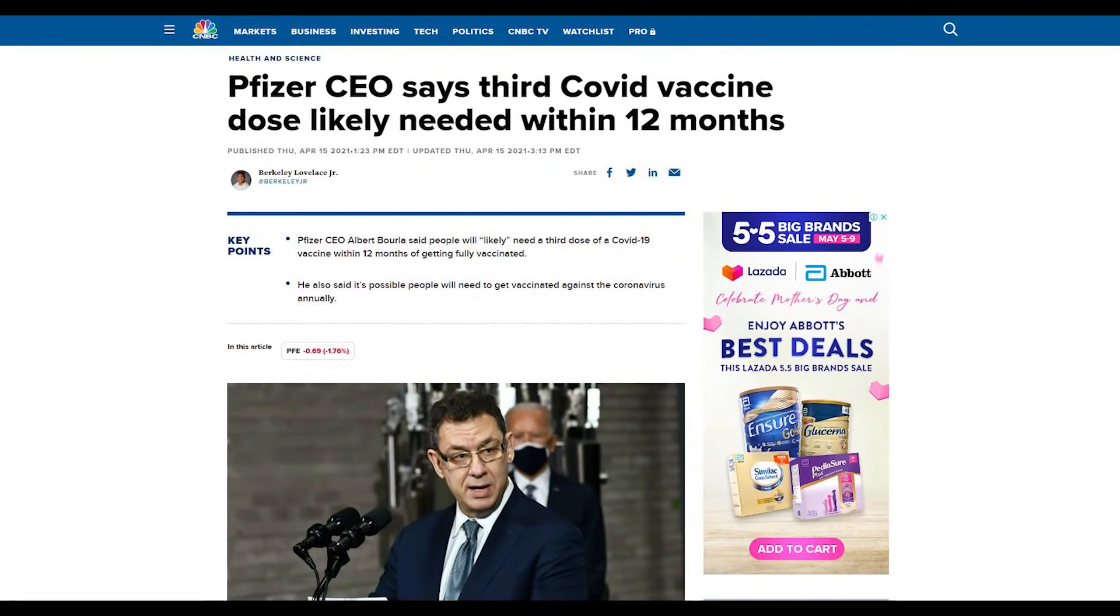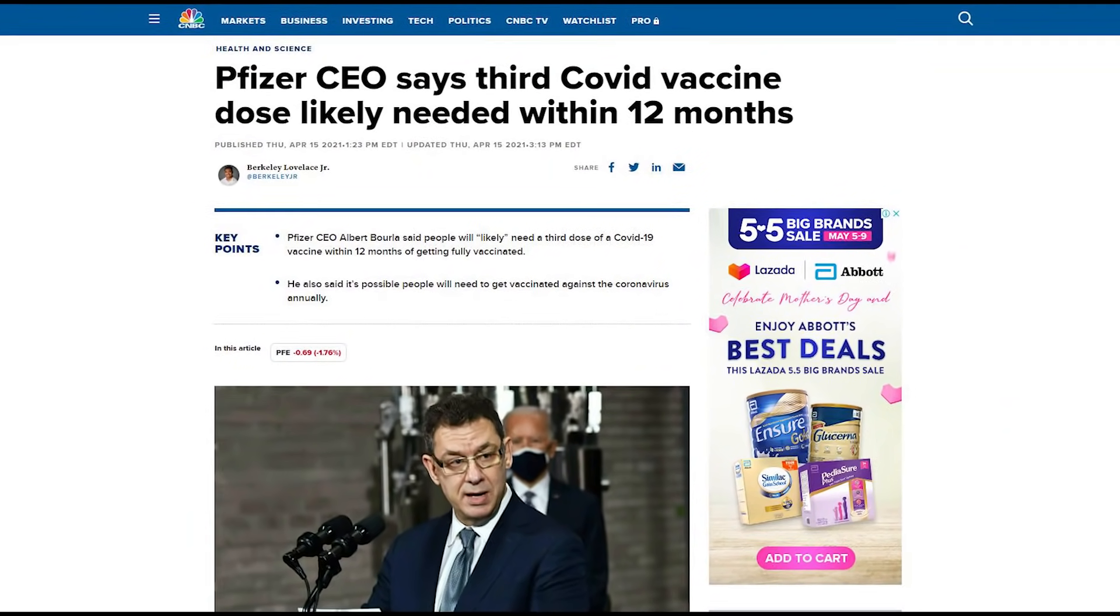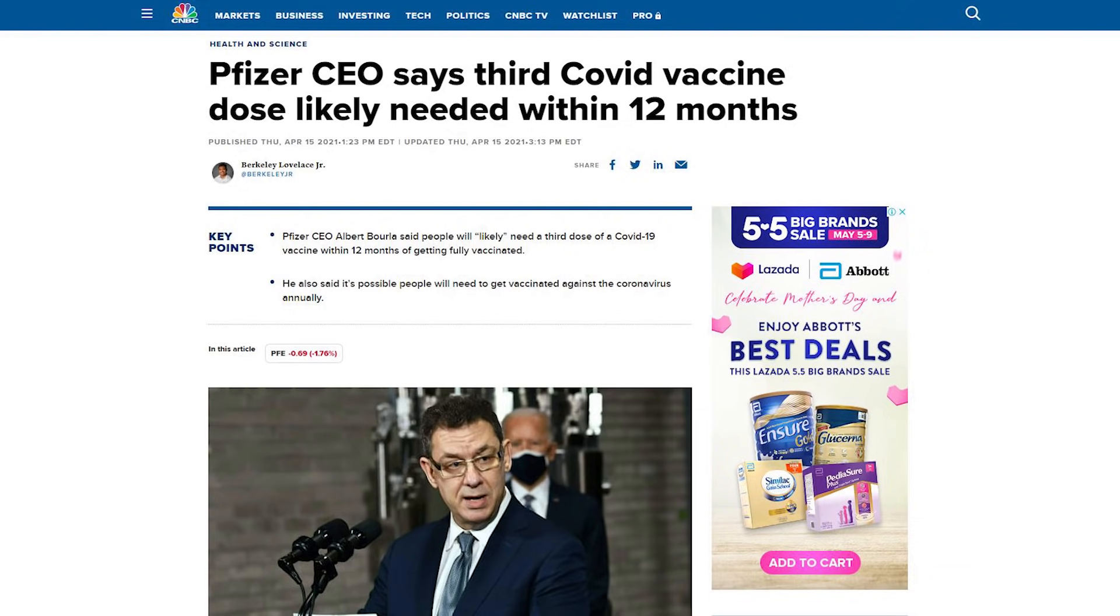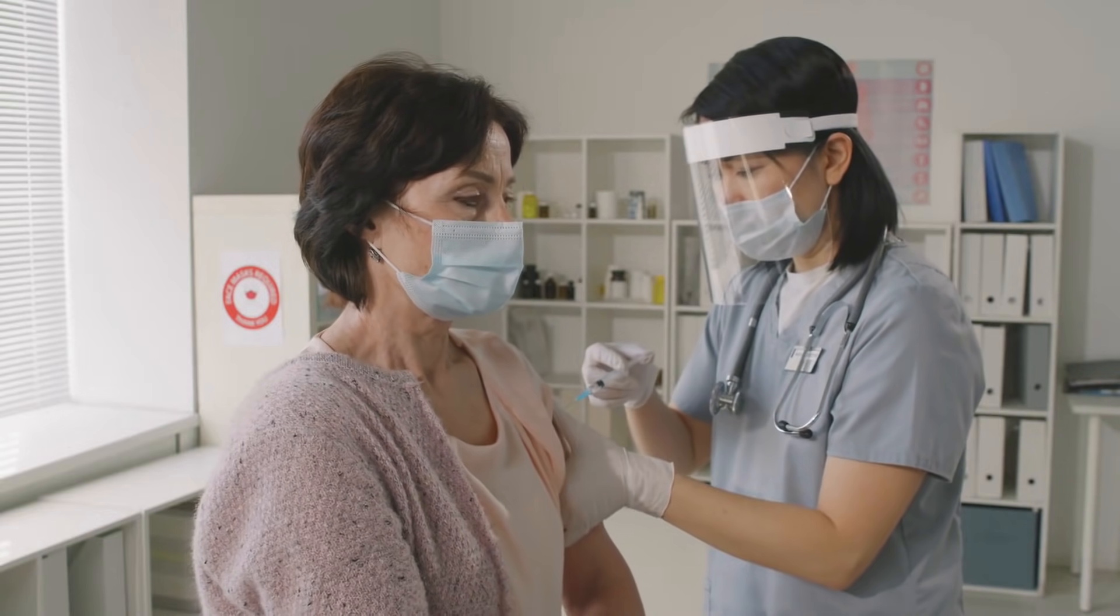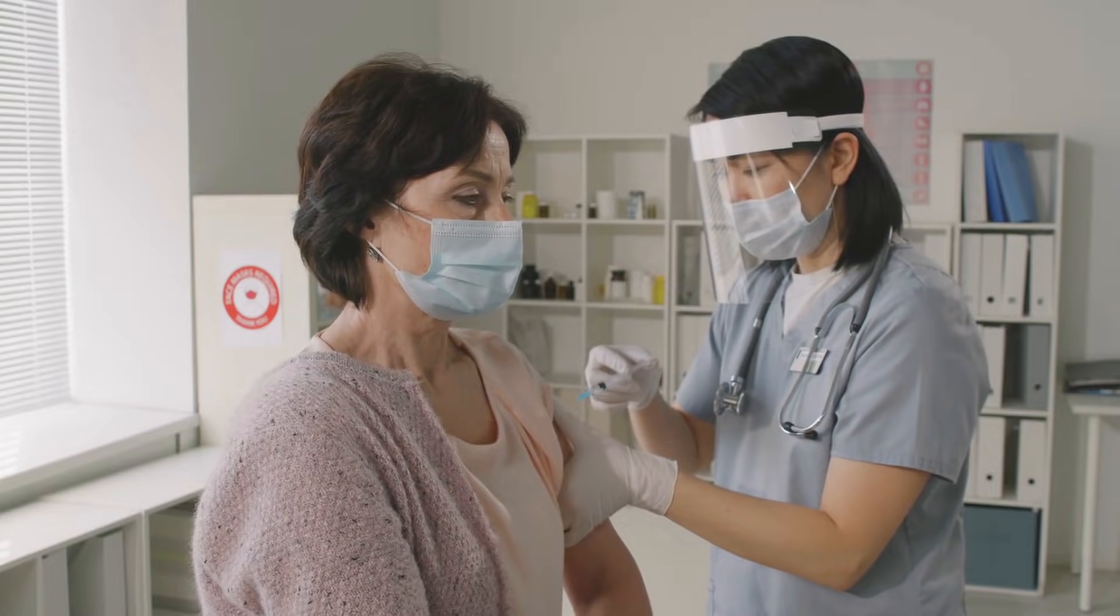According to CNBC, Pfizer told earlier this month that its vaccine, co-developed by BioNTech, is over 91% effective in protecting people against COVID-19, while over 95% effective in preventing severe disease for up to six months after the second dose.